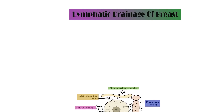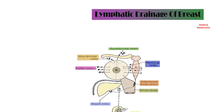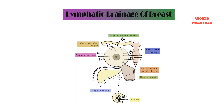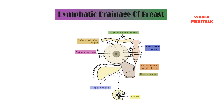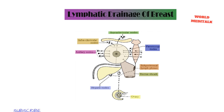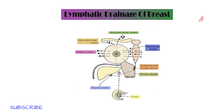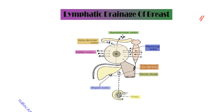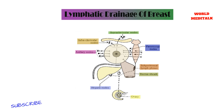The lower and inner quadrant mostly drains into the subperitoneal and subdiaphragmatic group of lymph nodes. The medial half of the breast mostly drains into the internal mammary group of lymph nodes, also called the parasternal lymph nodes. It is important to note that the internal mammary group also drains some portion of the lateral aspect of the breast.